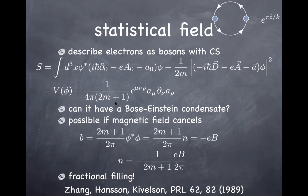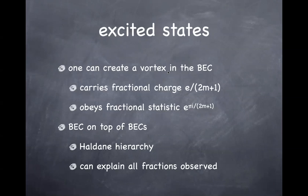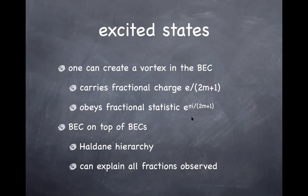You can also talk about excitations on top of this condensate — what are called vortices, which we'll discuss more later as one of the topological defects. When you consider a vortex in this exotic Bose-Einstein condensate, the vortex carries a fractional charge, which has been observed experimentally. This vortex also obeys anyon-like statistics — a fractional statistics that is difficult to demonstrate experimentally, so I don't know of data that really demonstrates it, but it is a consequence of this BEC described using the statistical field.